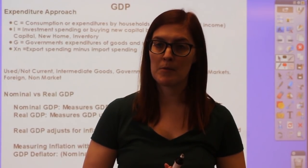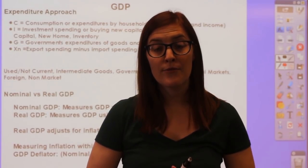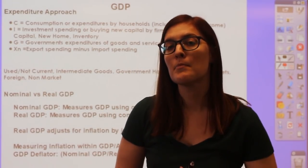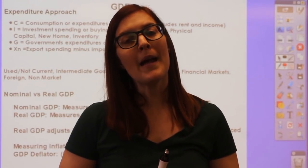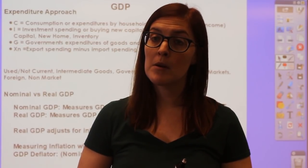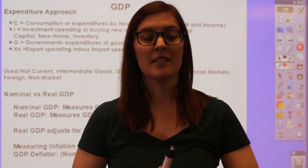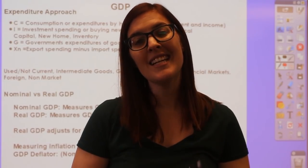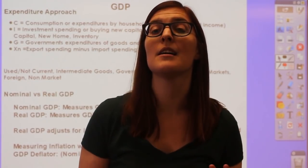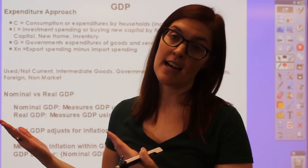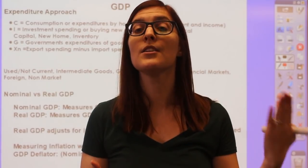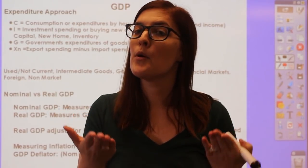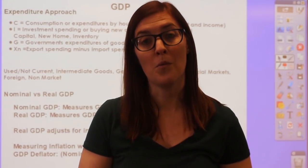The primary formula for the expenditure approach of GDP—which is the main formula on the AP exam—is C+I+G+XN. There's also the income approach, which measures GDP by adding everyone's incomes together instead of C+I+G+XN. One goes through the product market (expenditure approach) and one through the resource market (income approach), but since they're both parts of the circular flow model, they end up equaling the same number.